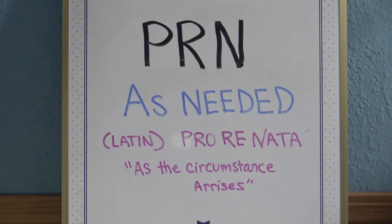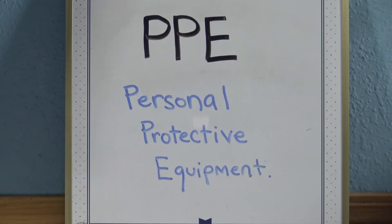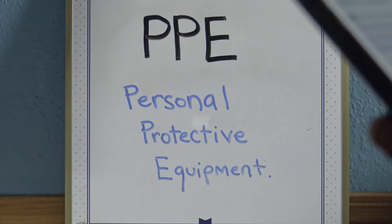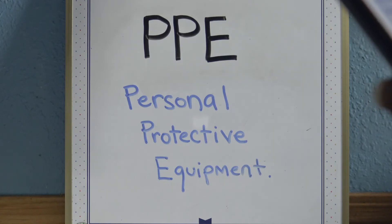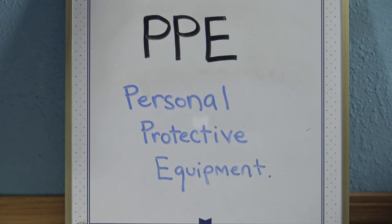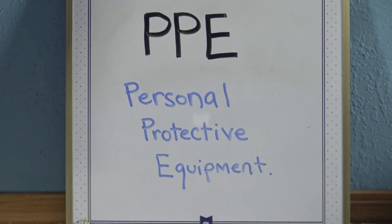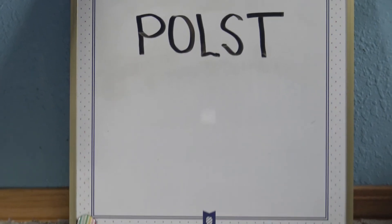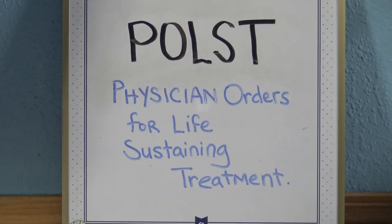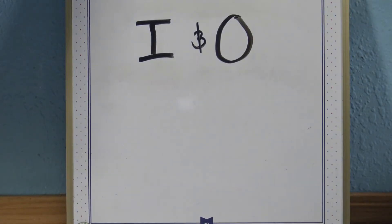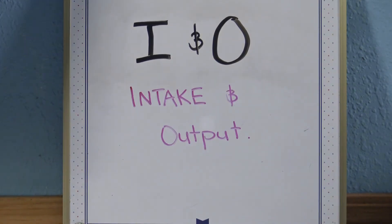PRN is as needed. PPE — PPE is personal protective equipment. It is material protective equipment: gloves, gown. It protects against infectious materials, so PPE is personal protective equipment. POLST — POLST is physician orders for life-sustaining treatment.